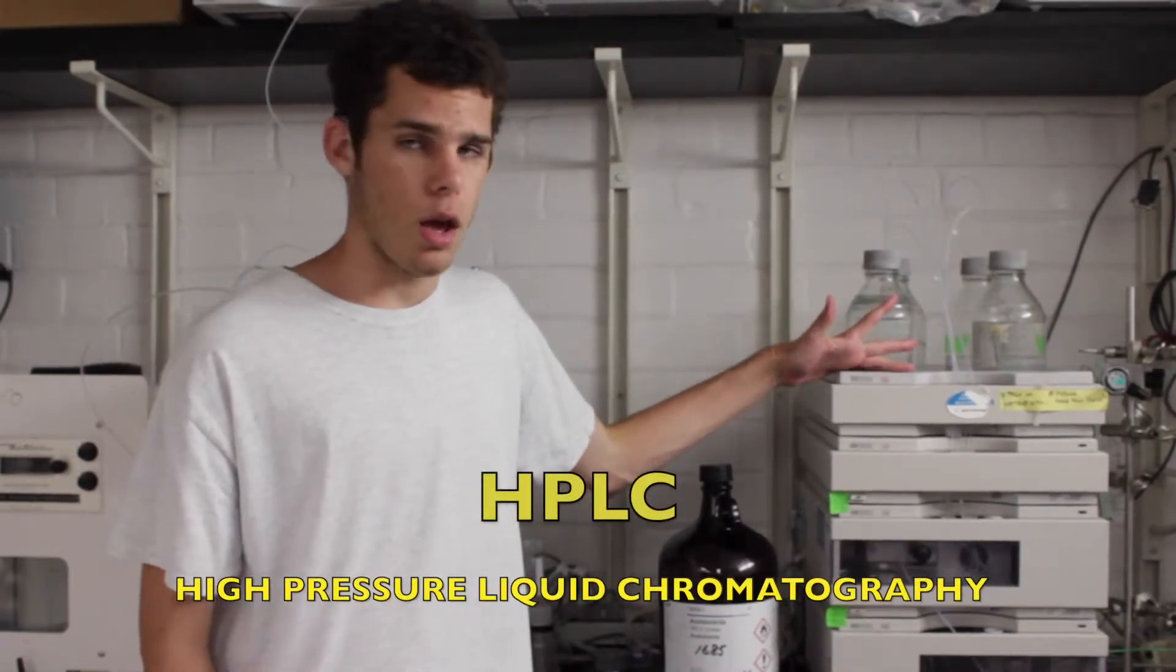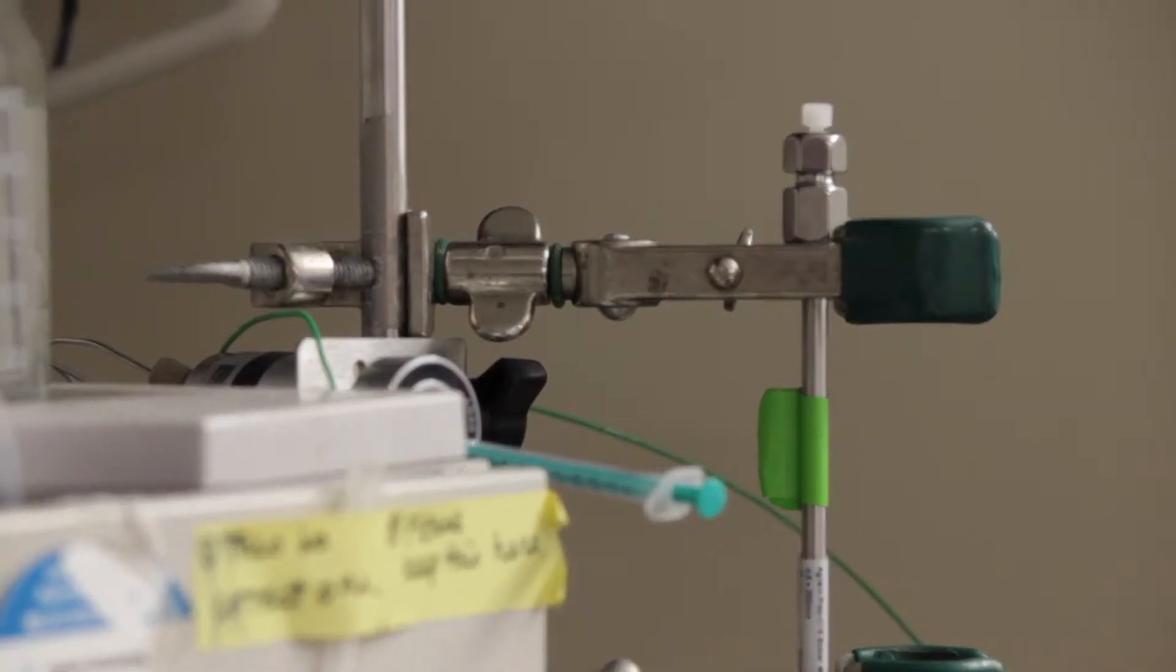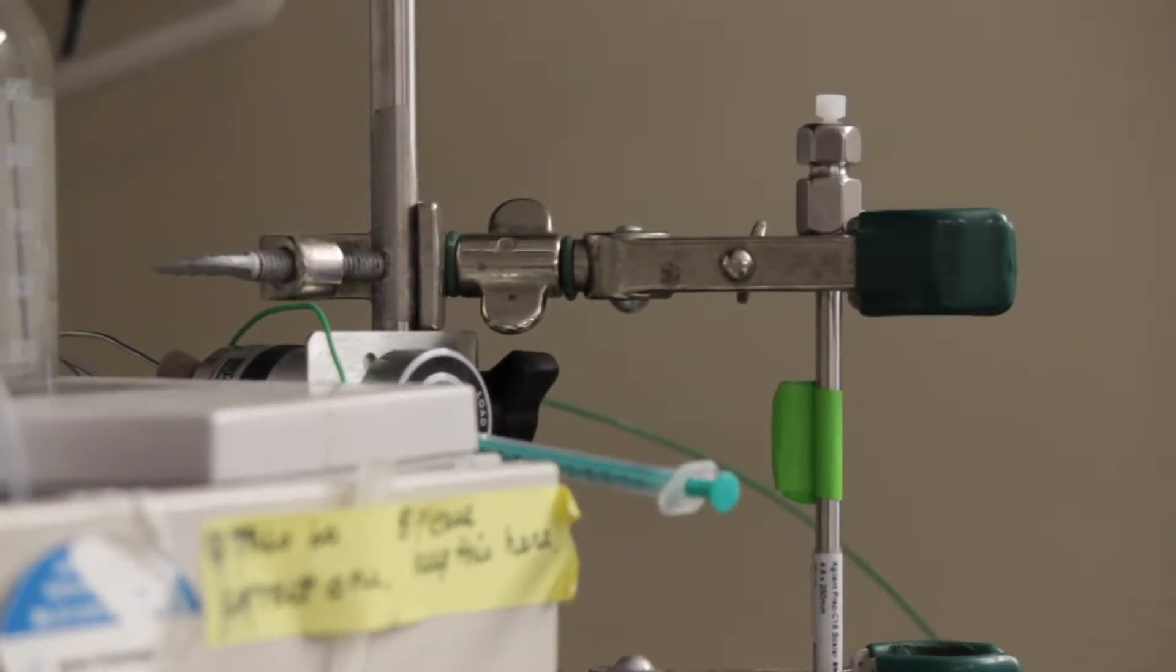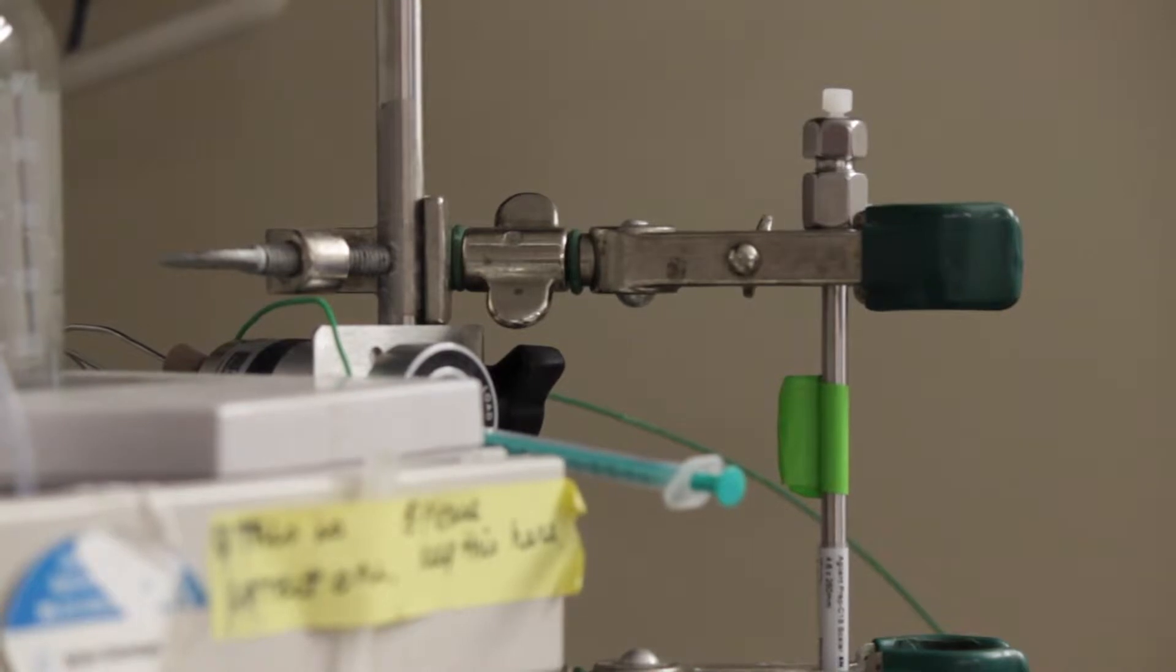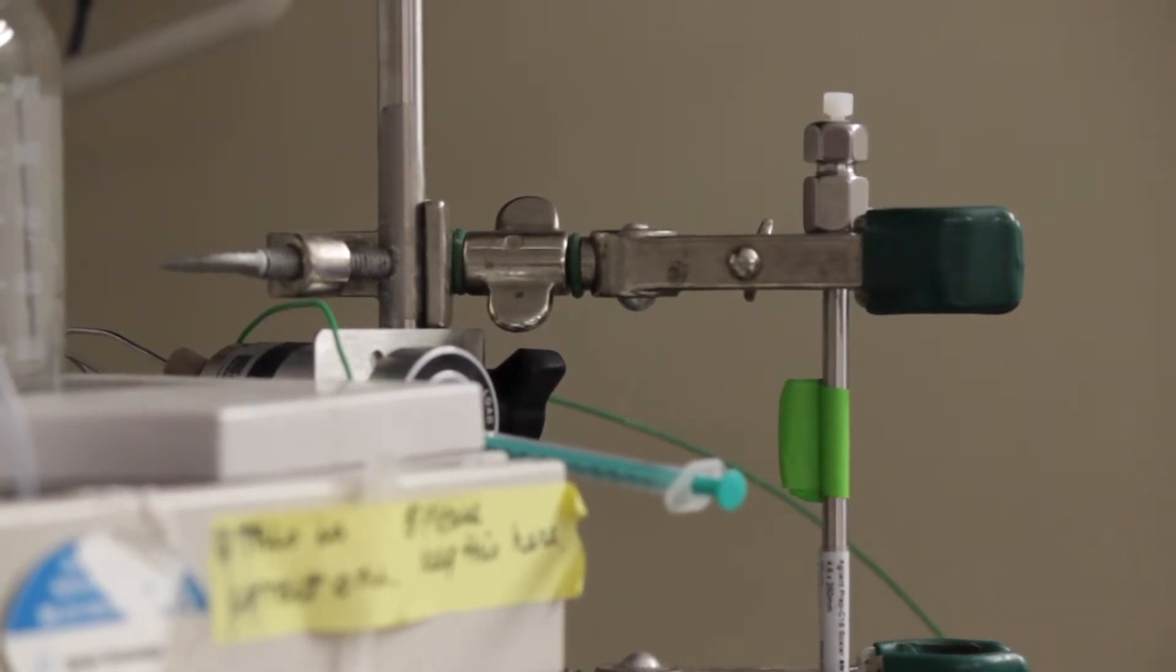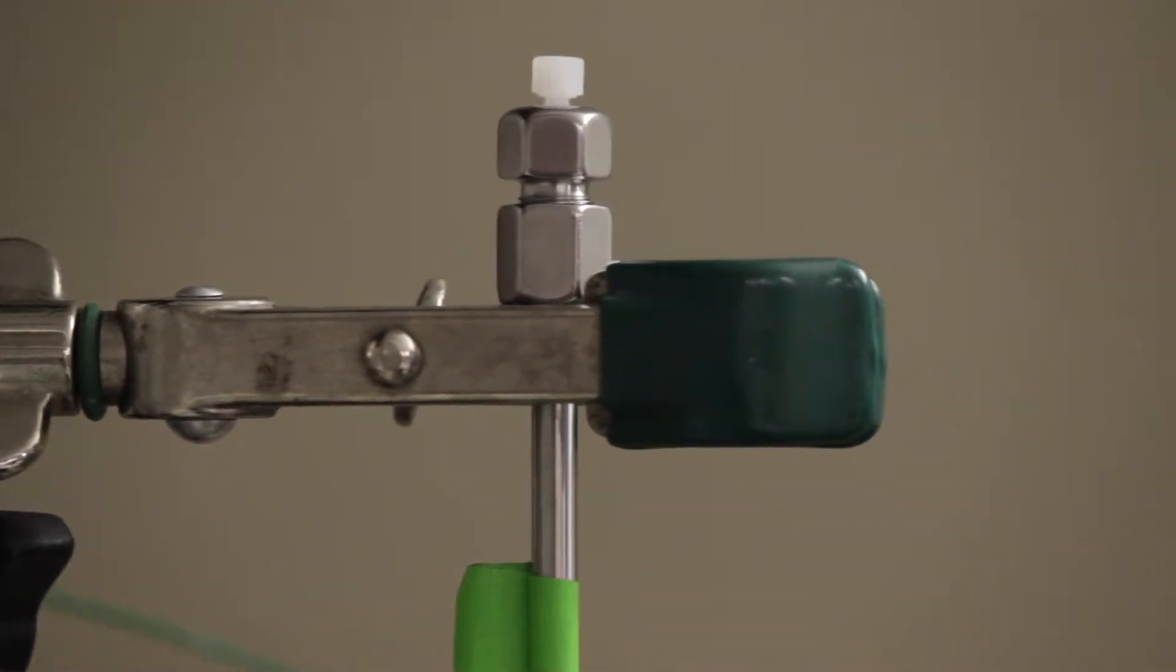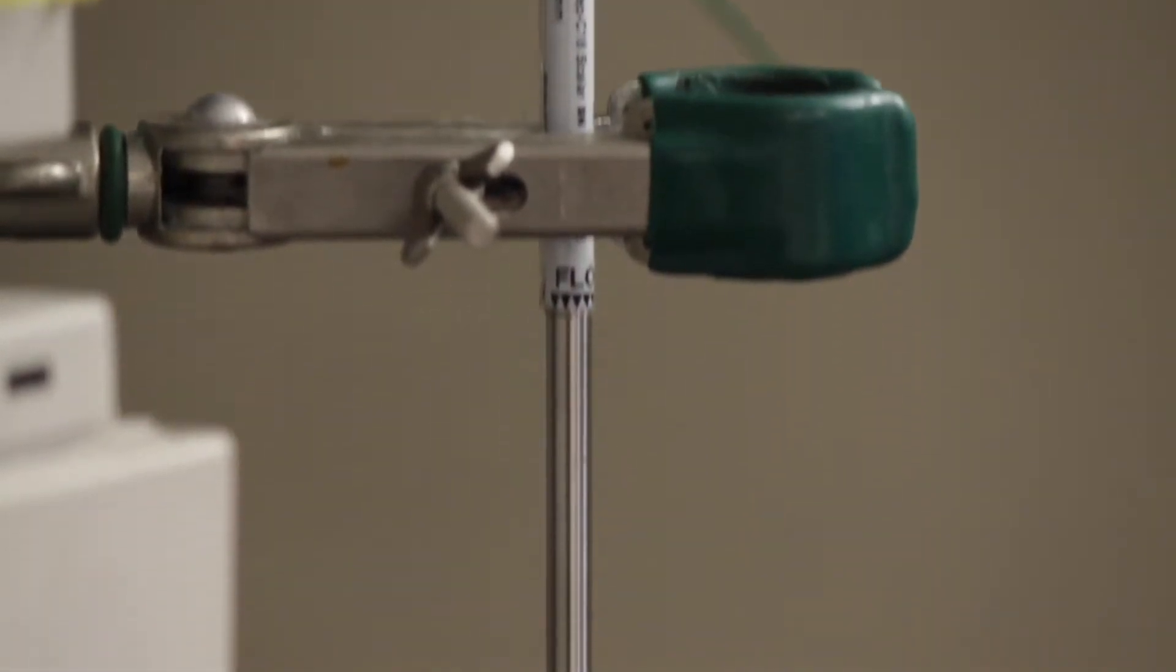So this bad boy here is called the HPLC, which stands for High Pressure Liquid Chromatography. Let me give you a brief explanation of what chromatography is. See that column? That column contains a solid of specific polarity and density, so liquids of varying polarity and density will move through the column at different rates of speed, separating out the compounds. That's what chromatography is.